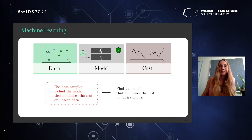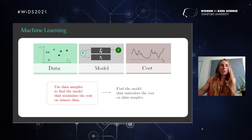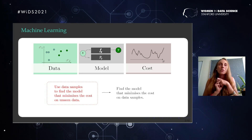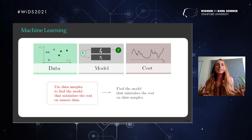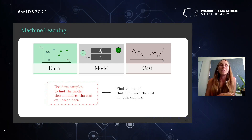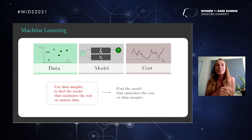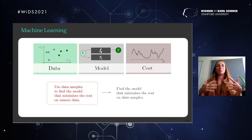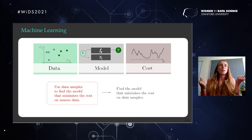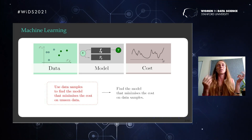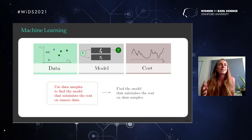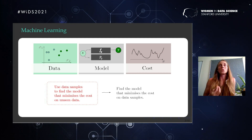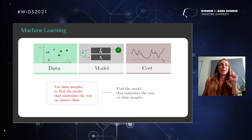Quantum machine learning is super rich with lots of different aspects. What I will talk about is replacing the model in a machine learning pipeline with a quantum computation. In machine learning we have data, a model, and a cost. Machine learning is the task of using data samples to find a model that minimizes cost on unseen data. You can use a quantum computer for lots of things: what if data is a measurement outcome from a quantum process, or can you use a quantum computer to solve the optimization problem faster?